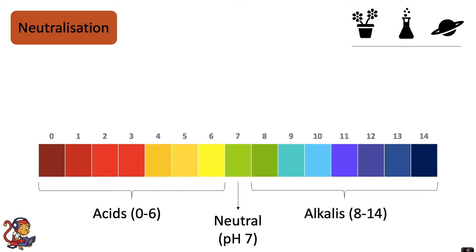Here is an image of the pH scale. When you add universal indicator to acids or alkalis it produces a range of colors. On the left you've got the acids from pH 0 to 6, which range in color from red, which is the strong acid, through to yellow, which is the weak acid. In the middle you get neutral substances at pH 7, and that's where you'd find pure water. On the right hand side you get the alkalis ranging from pH 8 to pH 14, ranging in colors from dark green through to blue and purple.